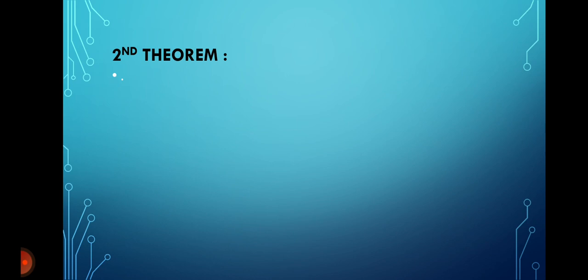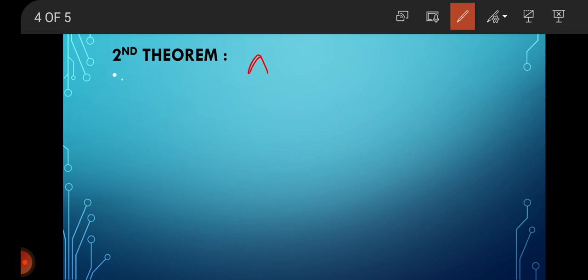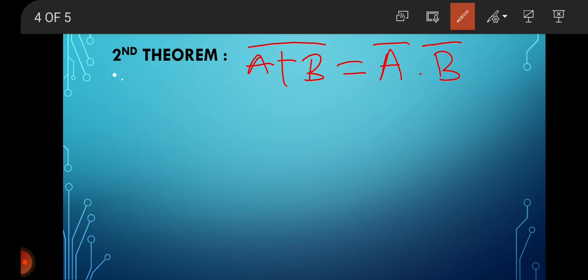Our second theorem is: (A plus B) bar equals Ā into B̄. This theorem states that the complement of a sum — that is, the complement of this sum — is equals to the product of complements, that is the product of the individual complements.